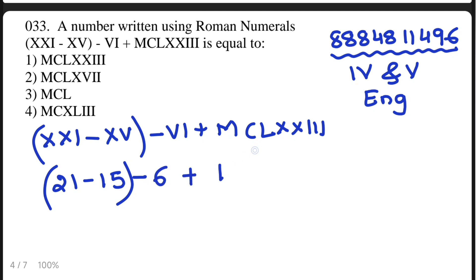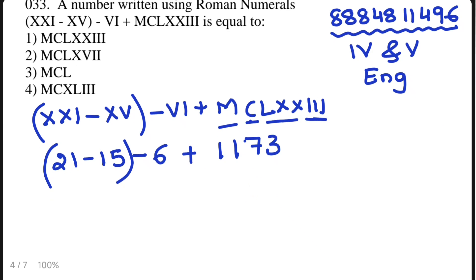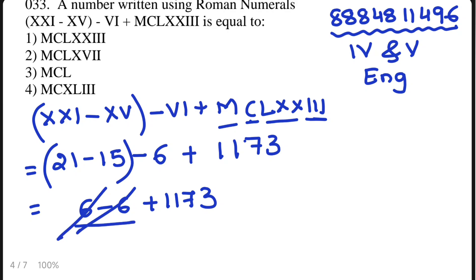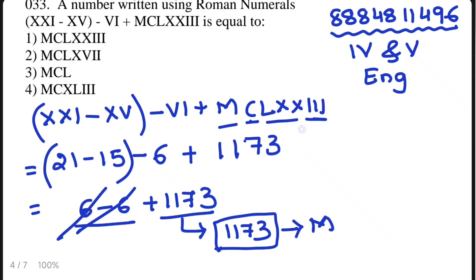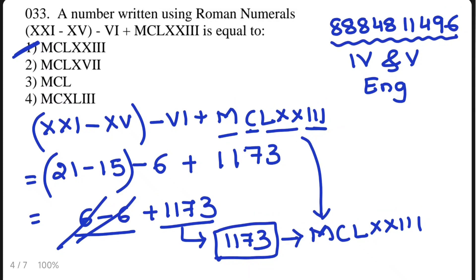Solving: 21 minus 15 = 6, then 6 minus 6 = 0 — both cancel off. You are left with 1173 only. In Roman numerals, 1173 is MCLXXIII. The answer is Option 1 — MCLXXIII. These questions look easy but they are twisted; you should untie them and then solve for the answer.